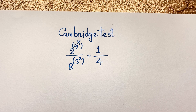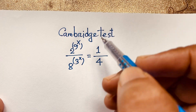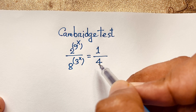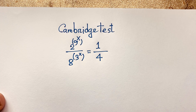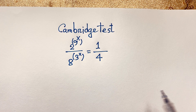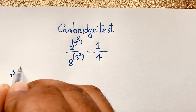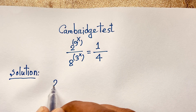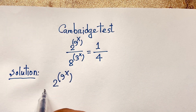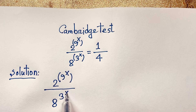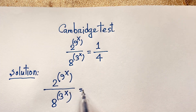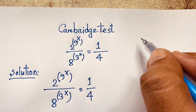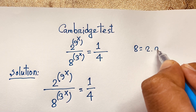Hello everyone, welcome to Russia's classroom. Today we have solved an interesting Canvas test question: 2 to the power 9x over 8 to the power 3x is equal to 1 over 4 — find x. So how to solve this interesting math question? Our question is 2 to the power 9x over 8 to the power 3x equals 1 over 4.